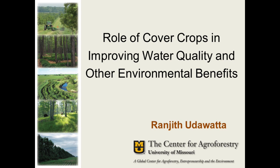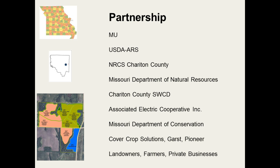I'd like to introduce next Ranjith Dawada, who's an associate professor here at the University of Missouri in Soil, Environmental, and Atmospheric Sciences. He's working at the Center for Agroforestry, which includes riparian buffers and various types of buffers. This is a partnership study located in Chariton County, Missouri, with scientists from MU, USDA-ARS, NRCS, the Missouri Department of Natural Resources, Chariton County Soil Water Conservation District. Associated Electric provided 129 acres of land for the study. Missouri Department of Conservation is helping put up different types of buffers; seeds are provided by Cover Crop Solution, GAST, and Pioneer; landowners, farmers, and private businesses are also involved.